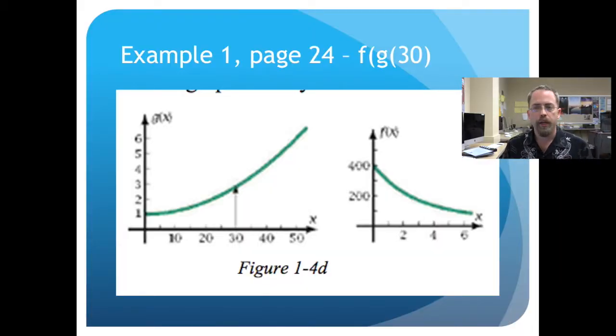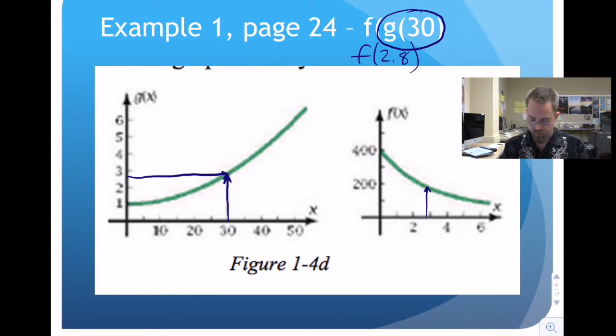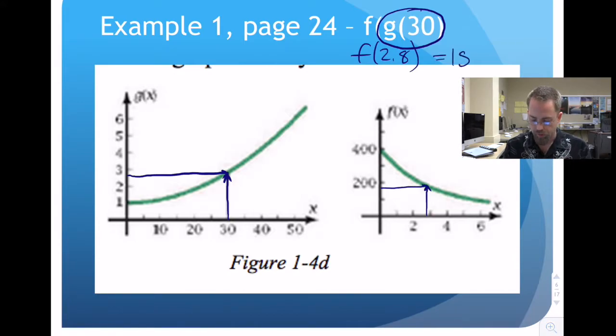Example number one from the textbook on page 24 says, let's find graphically f of g of 30. We look at our graph, and at 30 there is a particular y value. I'm looking just at the inside for a minute, evaluating what is g of 30. That looks to be 2.8-ish. We can evaluate that inside and get a number. Now we look over here at our f graph and say 2.8 has an output of 180, ballpark somewhere in that vicinity. We have to work our way from inside to outside, we do the inside part first, and then that becomes the output of the inside becomes the input of the outside.